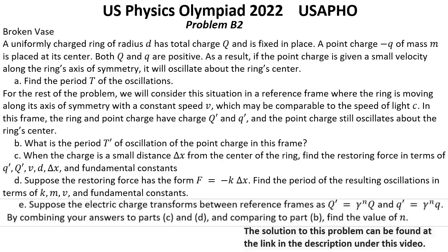In this frame, the ring and the point charge have charges BQ' and Q' respectively, and the point charge still oscillates about the ring's center.